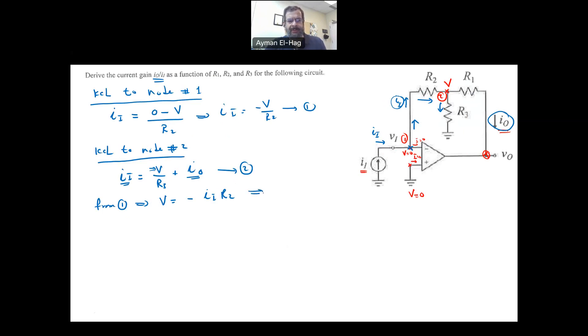I will substitute in equation two. So I_in equals V over R3, which is minus I_in times R2 over R3, plus I_out. Moving this component, we have I_in plus I_in R2 over R3 equals I_out. Taking I_in as a common factor, I_in times (1 plus R2 over R3) equals I_out. From this, the output gain I_out over I_in equals 1 plus R2 over R3, and that is what is required in the question.